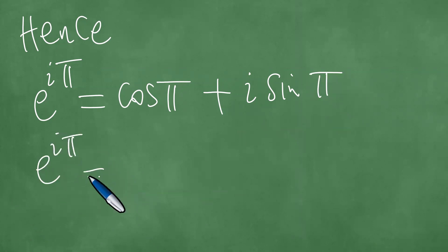So cosine pi is minus one and the sine of pi is zero. And minus one plus i times zero is zero, and therefore minus one plus zero is minus one.